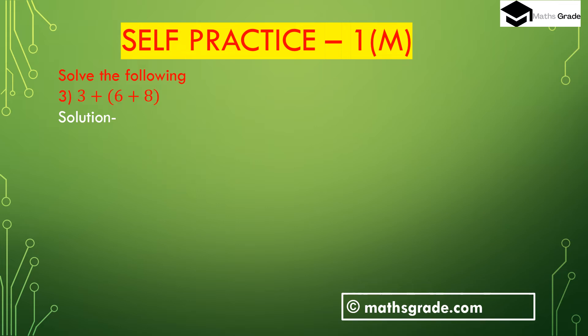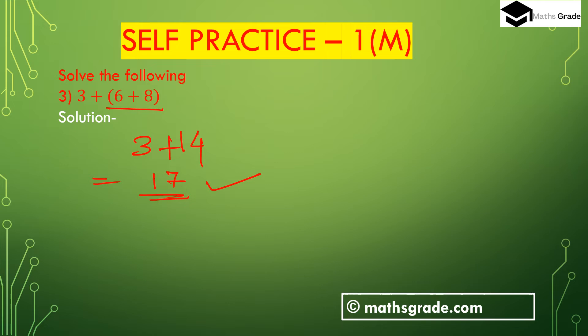Now question number 3: 3 plus (6 plus 8), where 6 plus 8 is inside the bracket. First we have to find the calculation of the addition inside the bracket: 6 plus 8 is 14. Then 3 plus 14 is 17. So 17 is the answer. So 3 plus (6 plus 8) is 17.